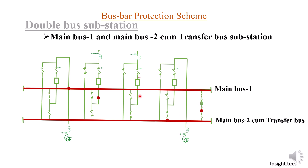Now, what happens when a circuit breaker is under some kind of fault or requires maintenance? In that case the breaker is open, so you will not be able to charge this particular bus from that line equipment, but the bus will still remain charged due to the bus coupler circuit breaker. However, suppose you want to inject power through that line due to grid loading requirements — in that case we can use the main bus cum transfer bus scheme.